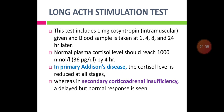For the long ACTH stimulation test, 1 mg of cosyntropin is given intramuscularly and blood samples are collected at 1 hour, 4 hours, 8 hours, and 24 hours. Normal plasma cortisol levels reach approximately 1000 nanomoles per litre or 36 micrograms per deciliter by 4 hours. In primary adrenal insufficiency, cortisol levels are reduced at all stages, whereas in secondary adrenal insufficiency, a delayed but normal response is seen.